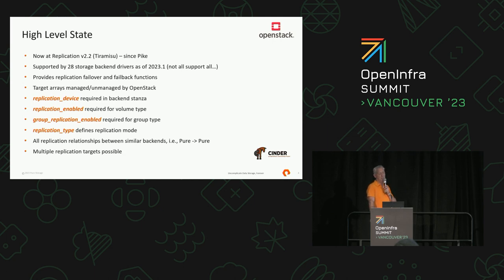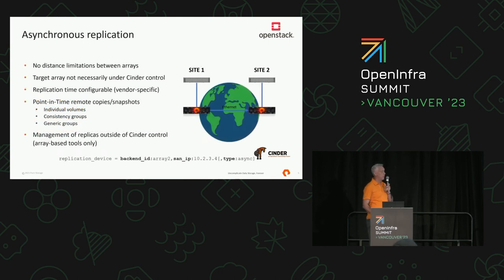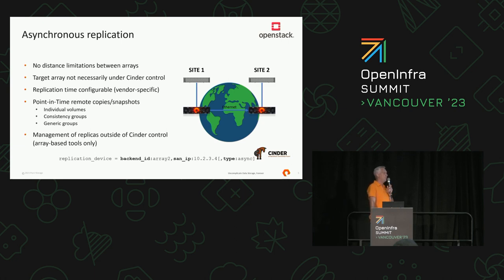Within Cinder you can actually do multiple replication targets, so you can have one-to-many replication should you want to do that. Or you can set up different volume types that replicate to one array or a different array — there are lots of different options available. Now let's talk about the different types of replication. There are basically two, with a third one recently added. The first is asynchronous replication, which is what most people consider to be like snapshotting replication.